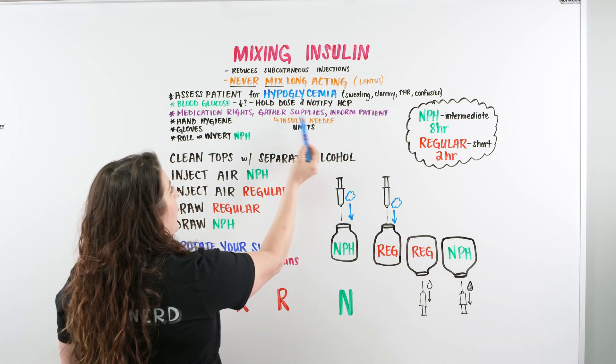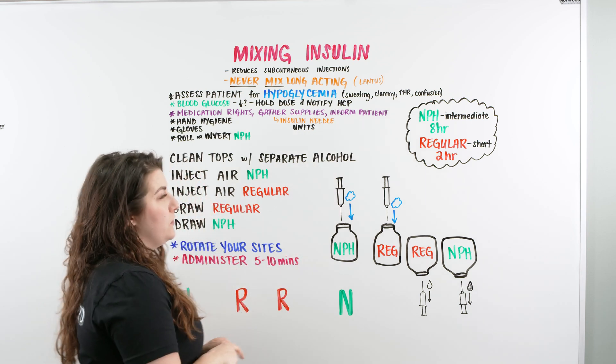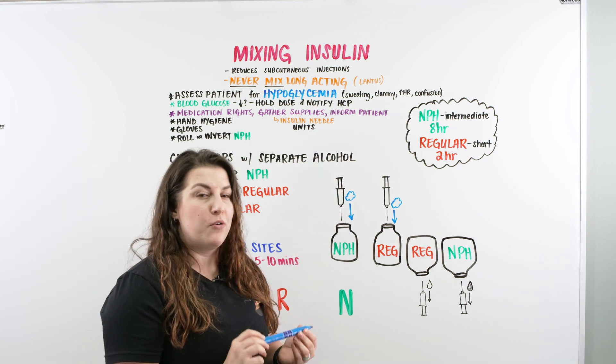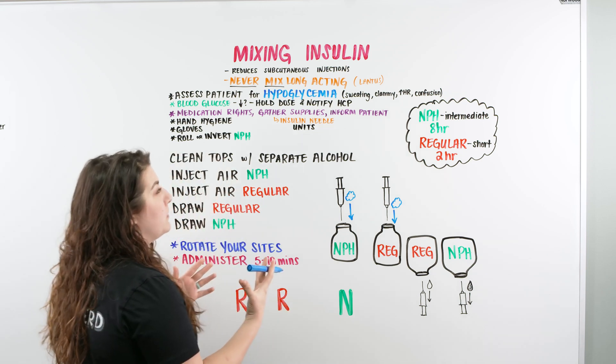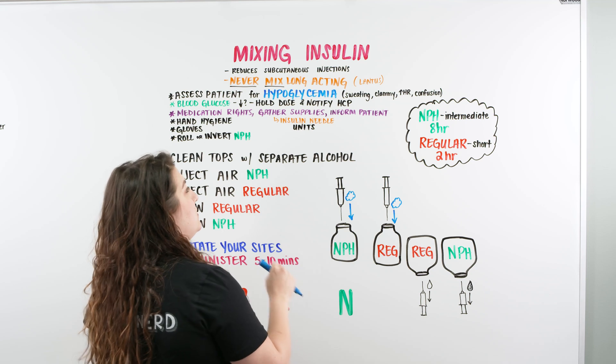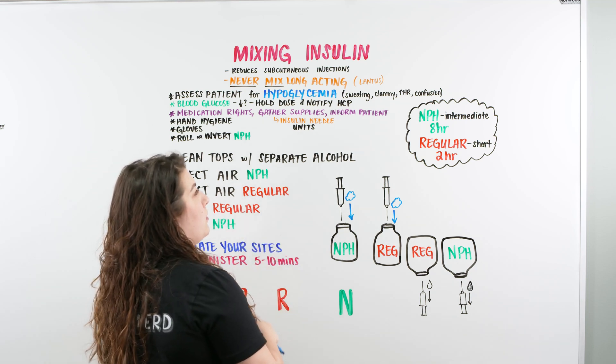We want to make sure that we're gathering their supplies. Make sure that you're getting insulin subcutaneous needles. And if you don't know what those are, check them out. They have units written on the side. They won't have milliliters. They won't have anything else written. It should say units. And there's a couple of different versions, but it could be a 50 unit or a 100 unit syringe.